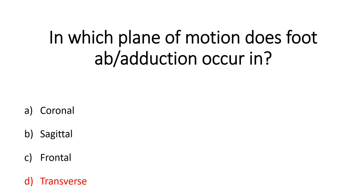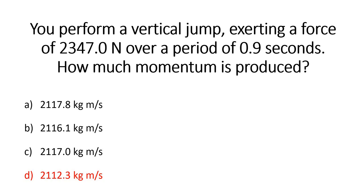The next question required a calculator and asked you to calculate the momentum produced during a vertical jump. The answer was D, 2,112.3 kilogram metres per second. If you multiply 2,347 newtons by 0.9 seconds, you get 2,112.3 newton seconds — that gives you the impulse. However, impulse is equal to a change in momentum. So if the impulse is 2,112.3 newton seconds, then momentum is the same value but expressed in kilogram metres per second.